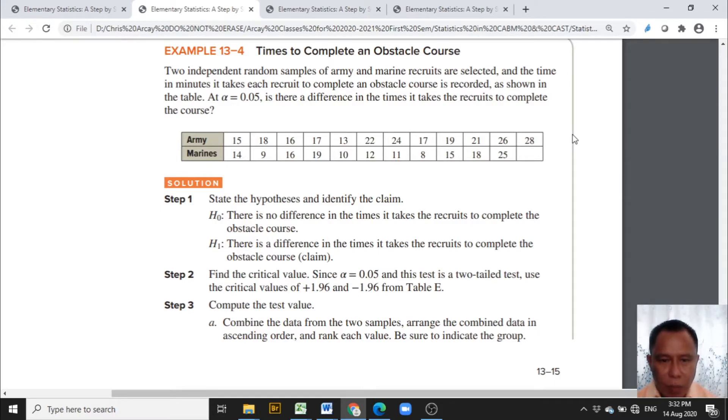Two independent random samples of Army and Marine recruits are selected, and the time in minutes it takes each recruit to complete an obstacle course is recorded, as shown in the table. At alpha equals 0.05, is there a difference in the times it takes the recruits to complete the course? We are given two groups of data, the Army and the Marines. These numbers stand for the minutes each recruit completes the obstacle course.